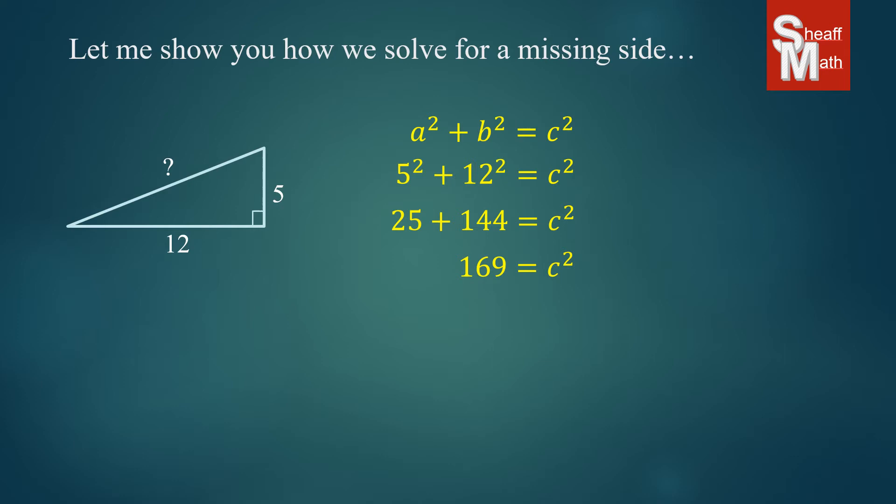Now, if you're not sure how to undo a square, we need to solve for C, not C squared. So the way to undo a square is that you square root both sides. And so I'm going to square root both sides of the equation. And 169 actually is a perfect square that comes out to 13. And so we get C equals 13.